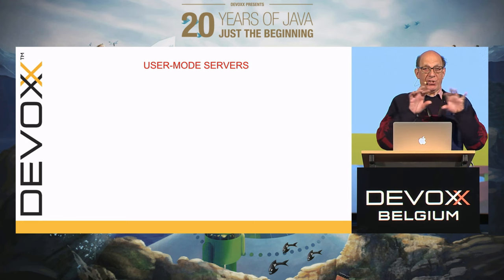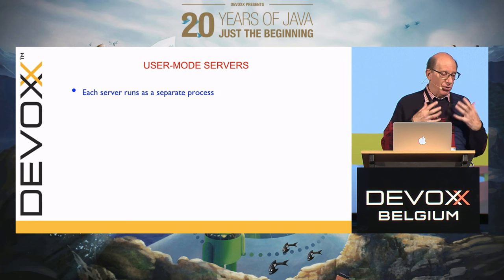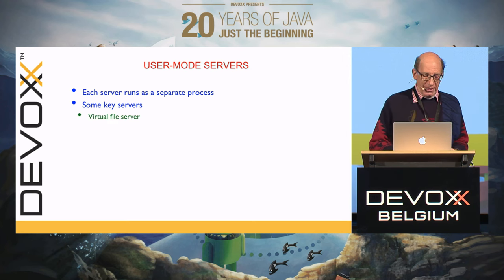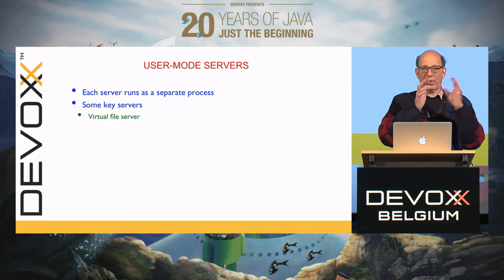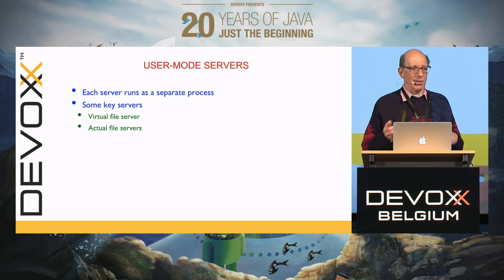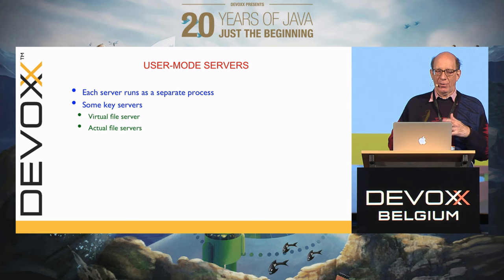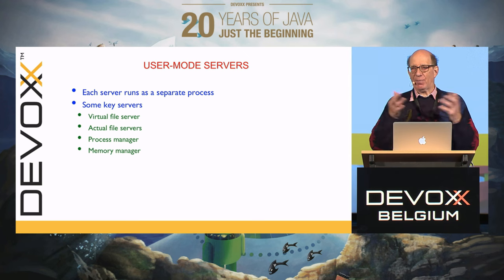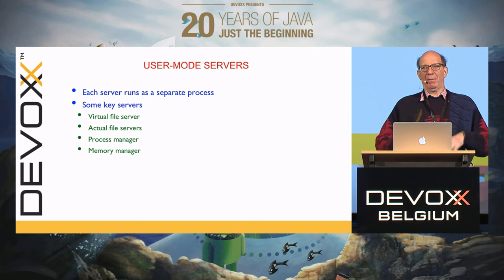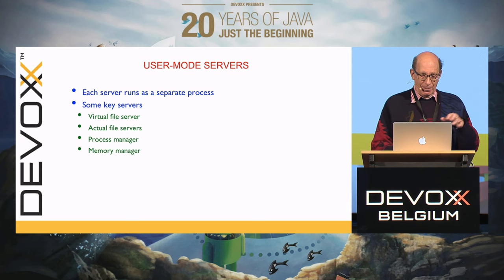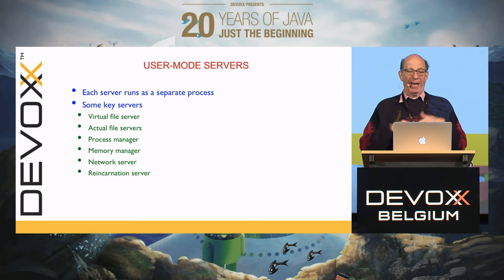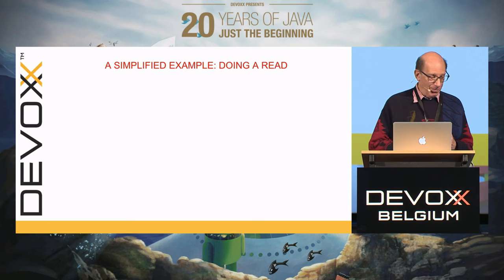The user mode servers are the real core of the operating system. Each server runs as a separate process protected by the MMU, so it can't get out of its sandbox. Key servers include the virtual file server, actual file servers like Minix and CD-ROM file servers, a process manager, a memory manager that allocates memory and manages page tables, the network stack running in user space, and the reincarnation server, which brings back the dead — I'll talk about that later.